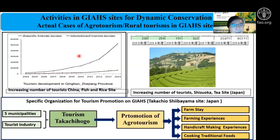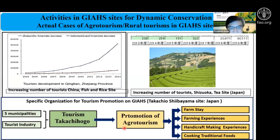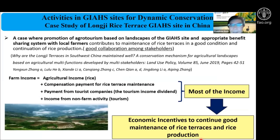Looking at actual visitor numbers, in China there is a clear increasing trend of travelers coming to GIS sites. Similarly, in the case of the Japanese tea production geosite, visitor numbers have been increasing. In Japan's Takachiho Shiba-yama site, a special association has been established through collaboration between private and public sectors, arranging agritourism activities such as farm stays, farming experiences, handcraft making, and cooking traditional food. In China, tourism revenue assists farmers economically and allows them to maintain rice terraces.